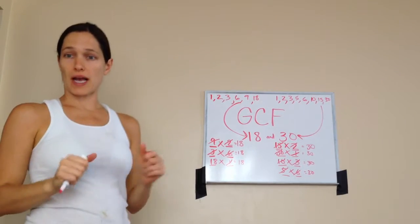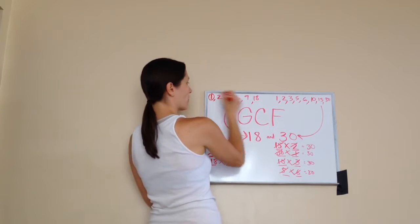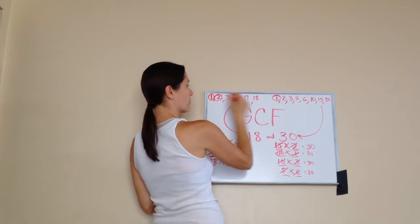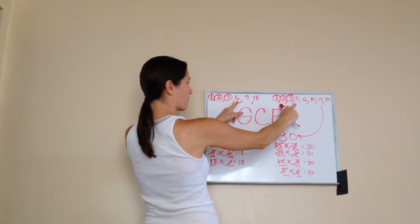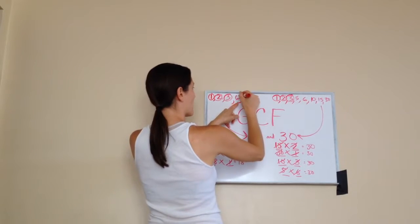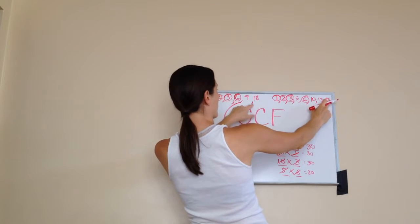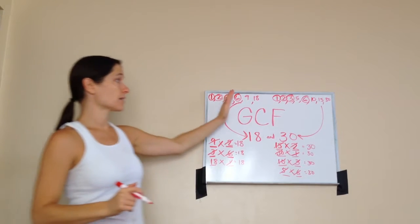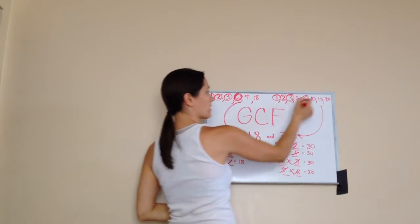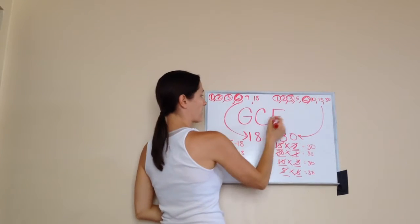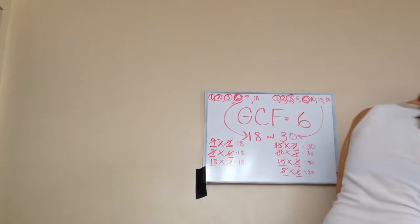Now, which ones are common, Isaac — which ones are the same? We have a 1 in both, a 2 in both, a 3 in both. A 5 in both? Nope. A 6 in both? Yes. A 10? No. A 15? No. And a 30 in both? No. So what is our greatest number that are the same? 6. Yes — 6 is our greatest common factor. So we would say GCF equals 6.